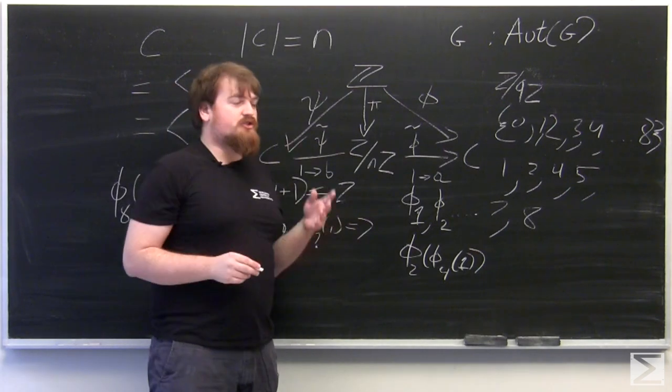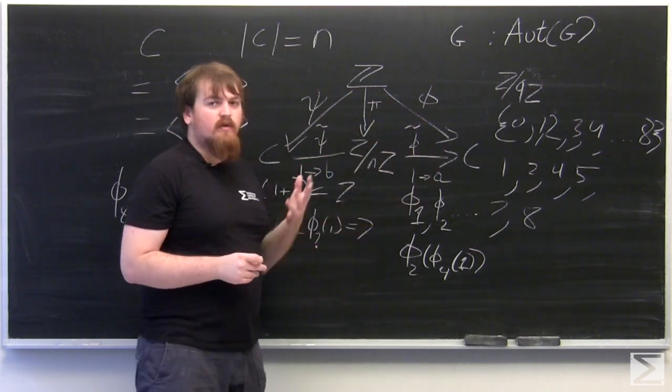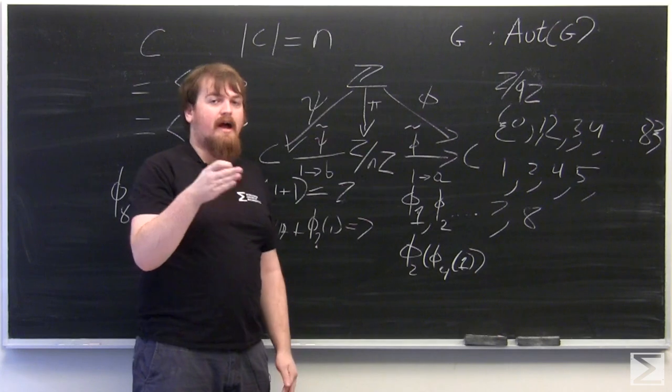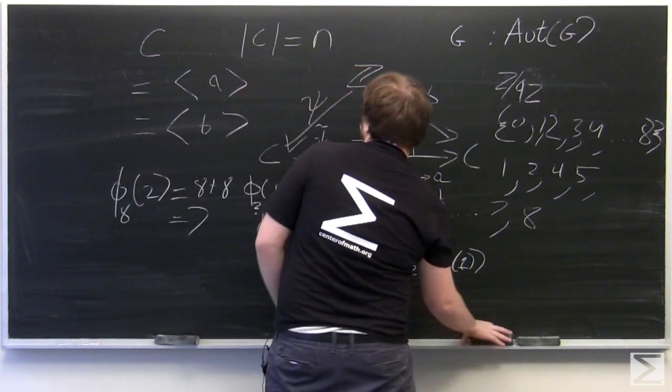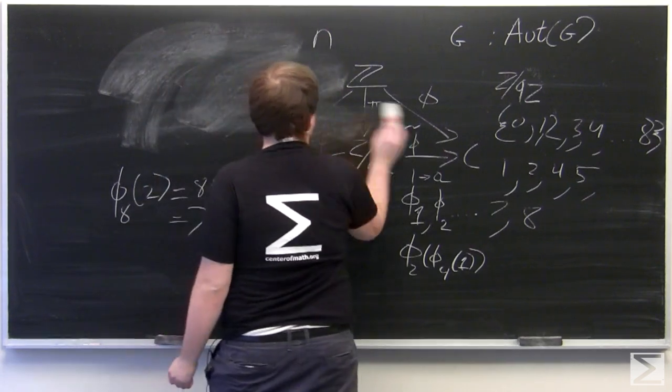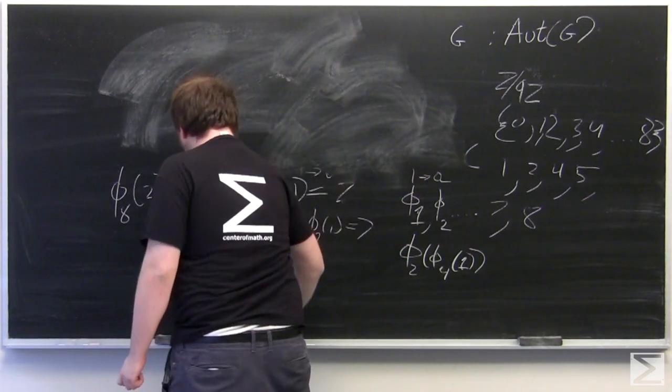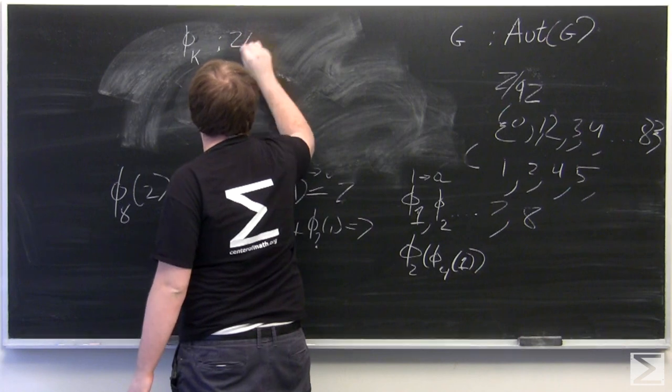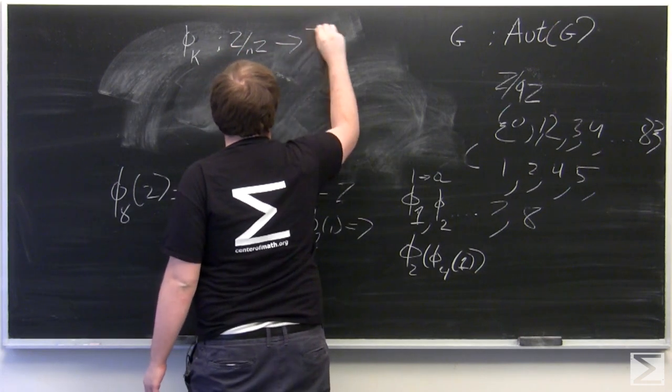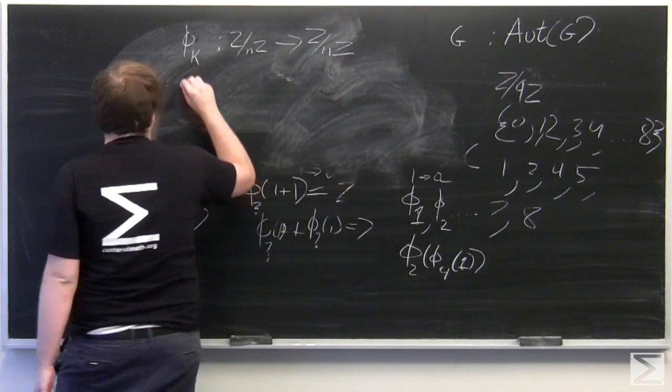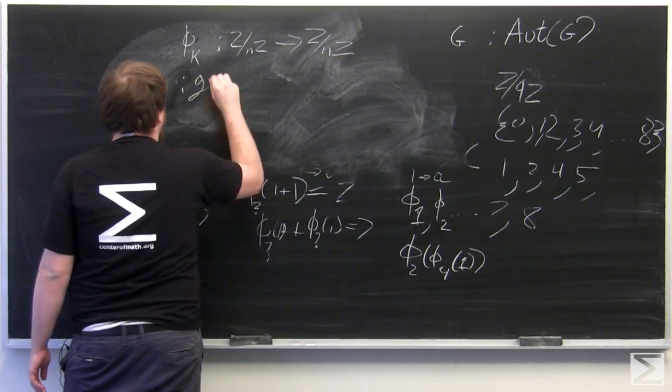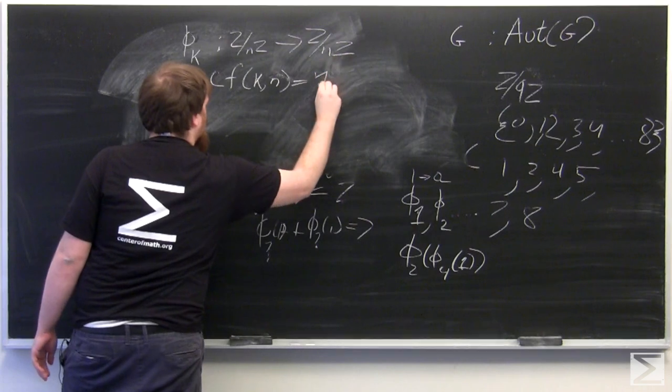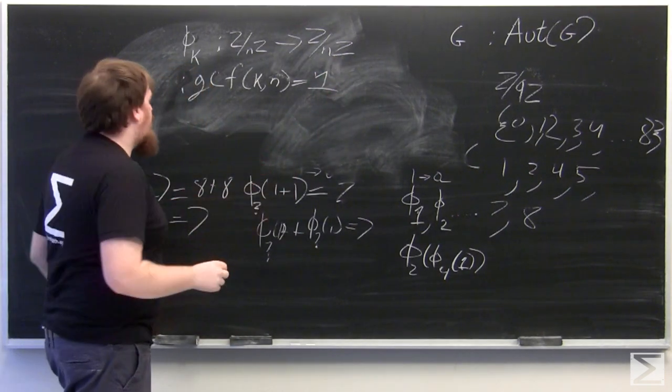So every element which is coprime to the N, which is the order of the cyclic group, is going to have an invertible automorphism associated with it, because multiplication by that number K is going to be phi sub K, which is an automorphism on Z mod NZ to itself.